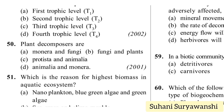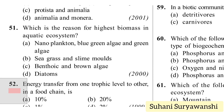Plant decomposers are: monera and fungi, fungi and plants, protist and animalia, or animalia and monera. There are no decomposers from kingdom Animalia, so options C and D are eliminated. Plants cannot be decomposers, so option B is eliminated. The correct answer is option A — monera and fungi.